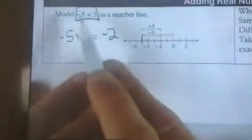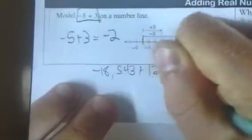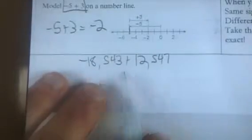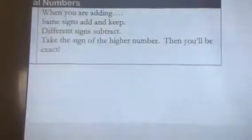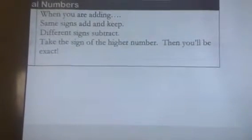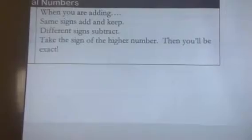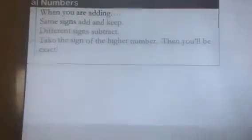But that's not always going to work — if you've got something like negative 18,543 plus 12,547, you're not going to draw a number line for that. You need a quick, simple way to do it. Here it is: this is the number chant when you are adding positive and negative numbers. Same signs, add and keep; different signs, subtract; take the sign of the higher number, then you'll be exact.